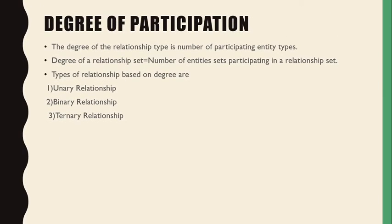Then there is a third type: the degree of relationship. The degree of a relationship type is the number of participating entities — that is, the total number of entities enrolled in a relationship. The degree of a relationship set equals the number of entity sets participating in it. There are three types: unary, binary, and ternary relationships.